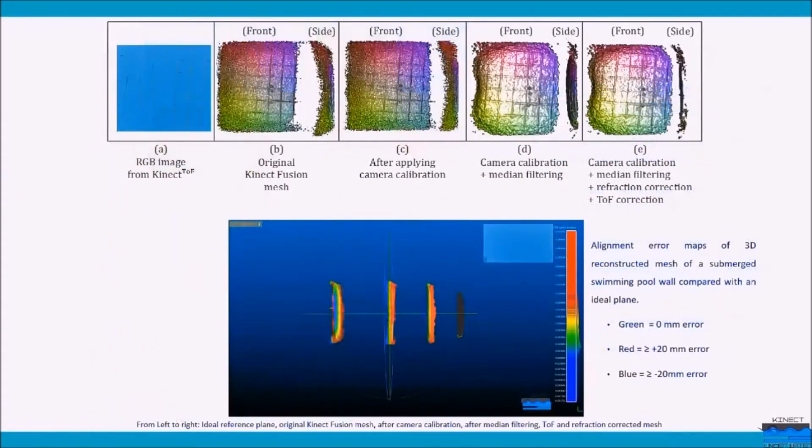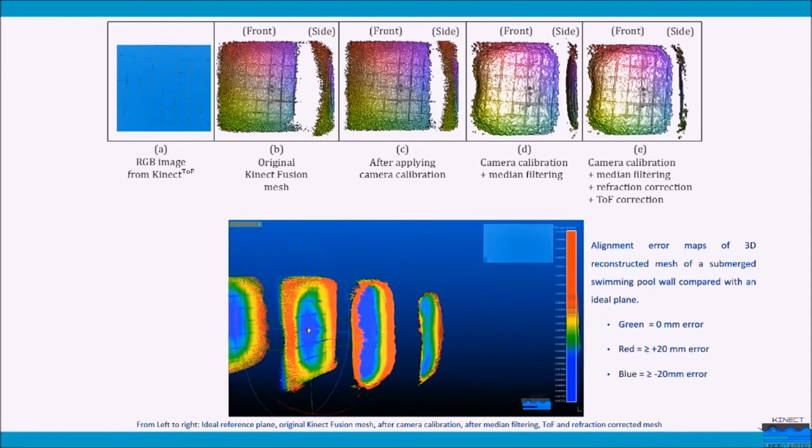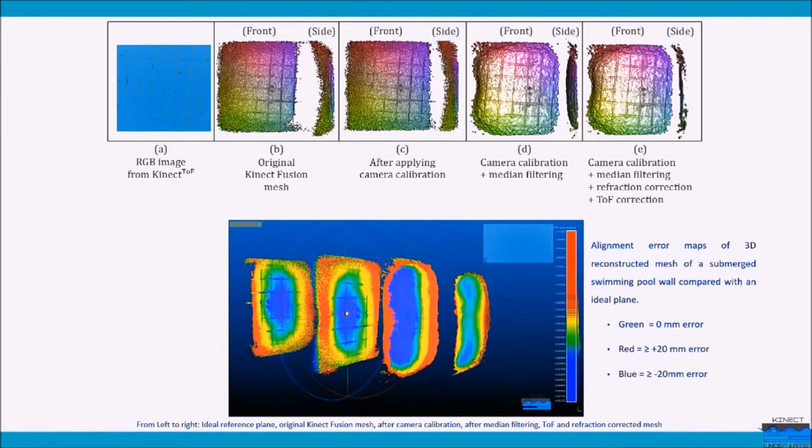Effects of a proposed refraction correction technique can be seen much more clearly when a flat wall is reconstructed in 3D. After processing, we are able to achieve a mean error of 1.3mm and a flatter 3D mesh after canceling out the pin-cushion distortion.